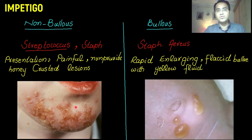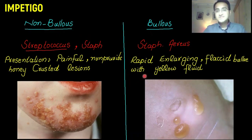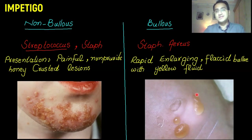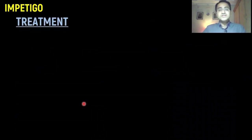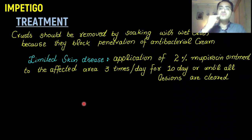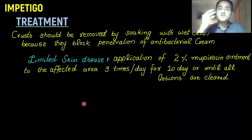Non-bullous impetigo presents as painful, non-productive honey-crusted lesions, as evident in the picture. Bullous impetigo presents as rapidly enlarging flaccid bullae with yellow fluid in them, as seen in the picture.